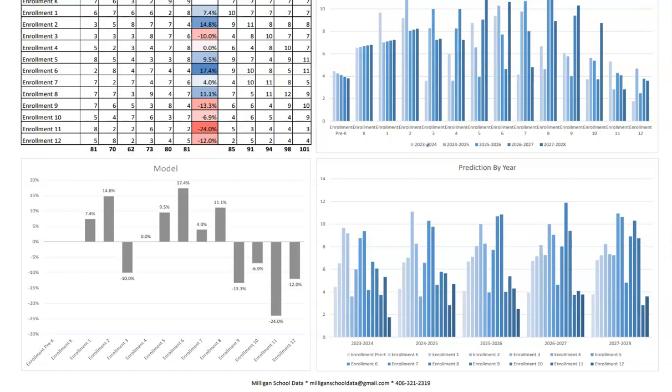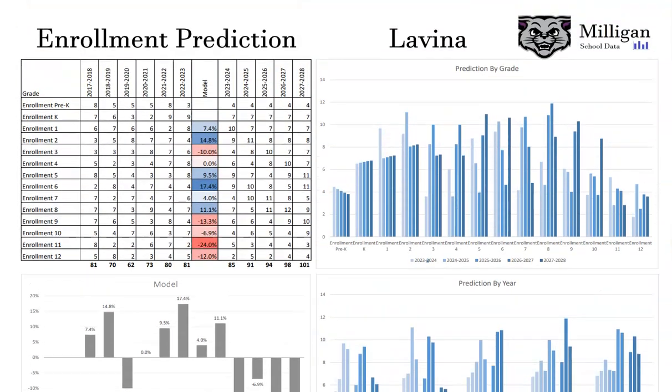A couple of things to point out: we do collect the data on pre-K enrollment, but what we've discovered is that pre-K enrollment is not predictive of what kindergarten enrollment will be. So we don't actually build a predictive model from pre-K to kindergarten.